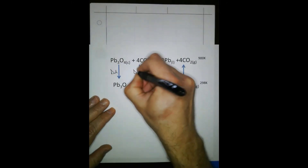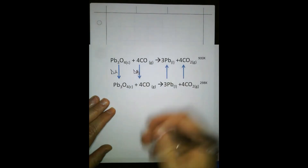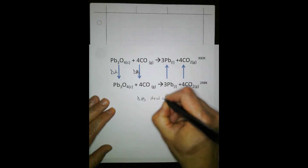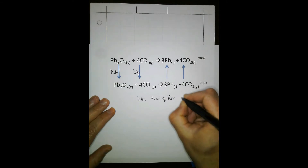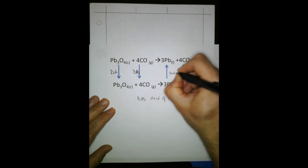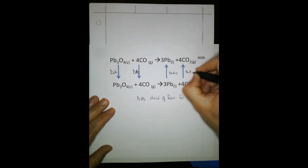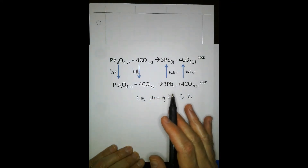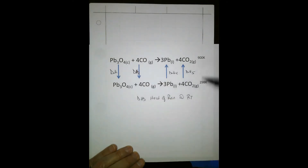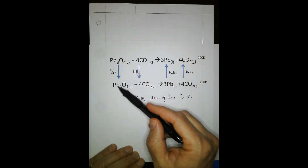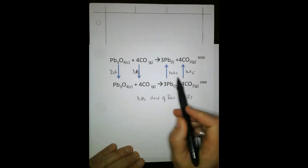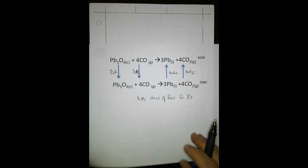We have Delta H1, Delta H2, and Delta H3 is the heat of the reaction at room temperature. Delta H4 and Delta H5. These arrows are helpful — it's useful to diagram out a problem like this, simply because you can pay attention to the sign. If we're going from 900 K to 298 K, it's going to be negative because you're cooling. If we go from 298 K to 900 K, it's going to be positive because we're heating.